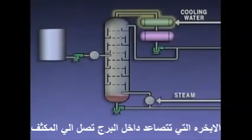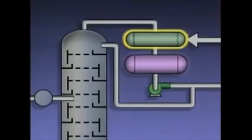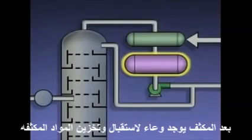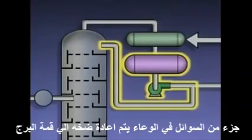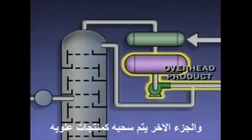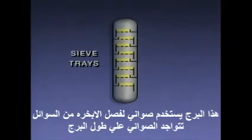The hot boil up provides the heat needed for the distillation process to take place in the tower. The vapors that rise up in the tower are routed to a condenser, which cools and condenses the vapors into liquid. From the condenser, the liquid flows into a receiver or accumulator. Part of the liquid from the receiver is pumped back into the top of the tower, and part of it is drawn off as the tower's overhead product.